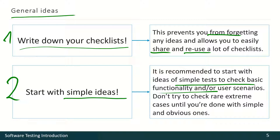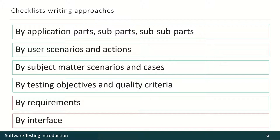So how to write good checklists? How to think while writing good checklists? The first approach is to split your application or system into parts, sub-parts, sub-sub-parts, and so on, and write a checklist for each of those parts.